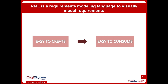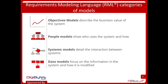We classify our models into four different categories. The first one is objectives models. These are all about focusing on the value the system is going to bring to the people, to the business, to the customer — whoever is going to need to use the system or is paying for the system. These models help describe what problem are they trying to solve, what goals are they trying to attain with the particular project underway. The second category is our people models — all about focusing on who is going to use the system and how they're going to use it.